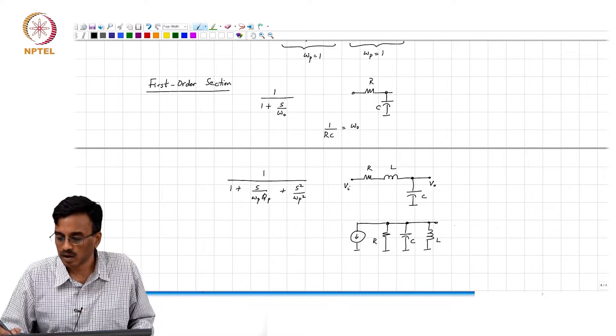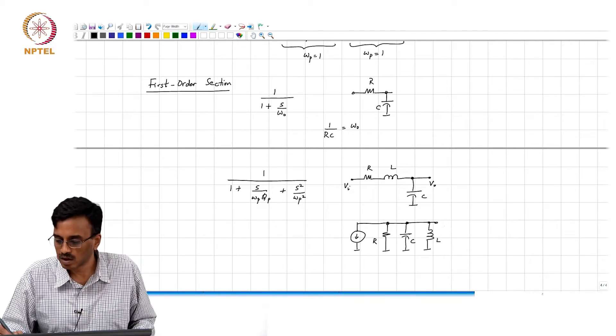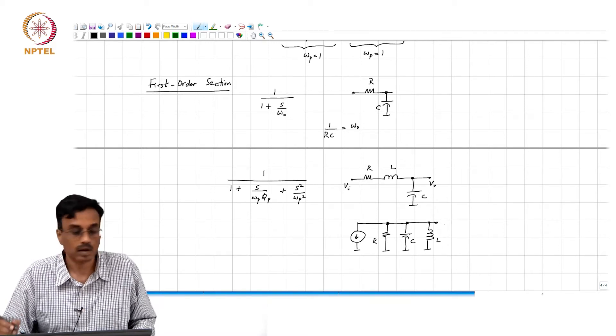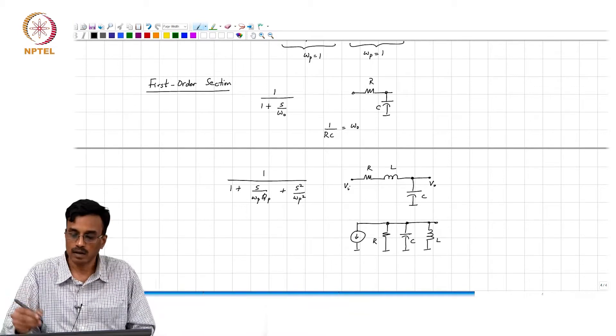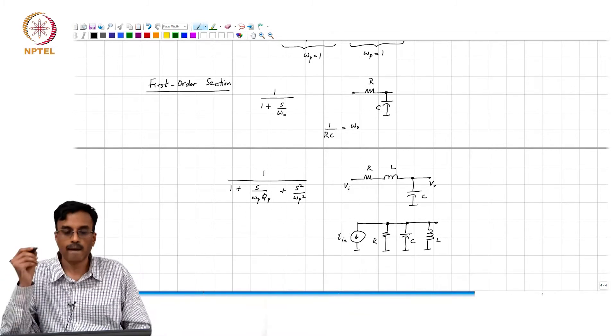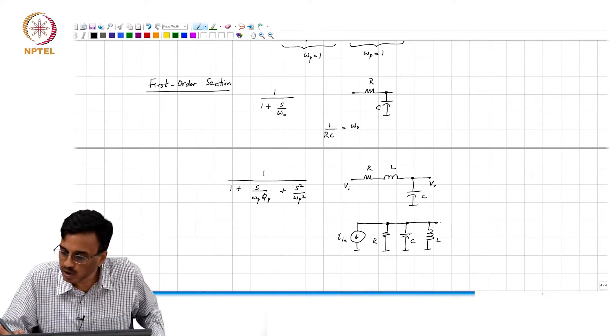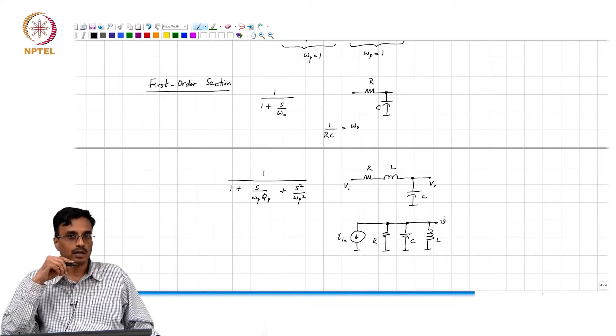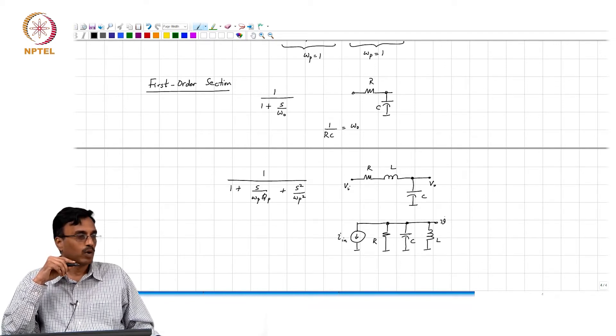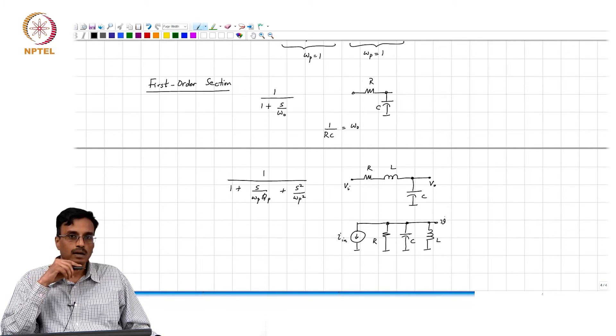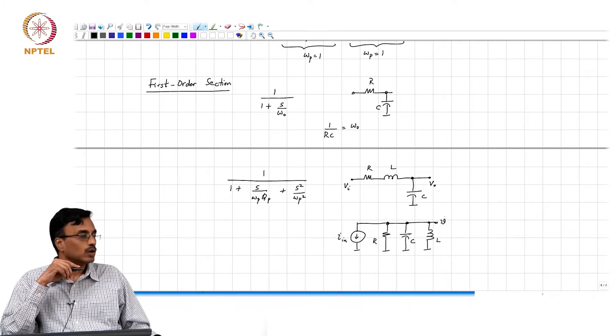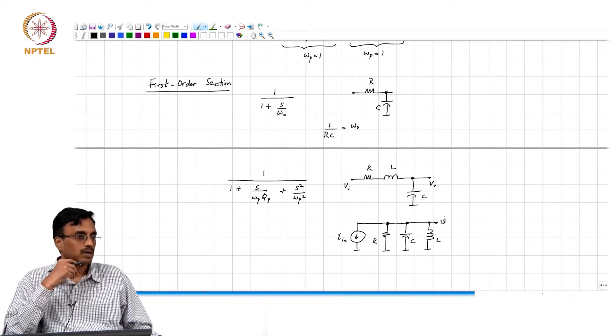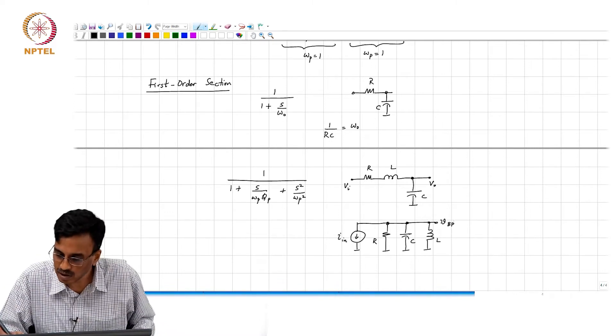What comment can we make about the voltage across the inductor here? What kind of transfer function is that? Input current to output voltage here is what kind of transfer function? What is the value of the transfer function for DC? 0. For infinite frequencies it is 0. So this is a band pass transfer function.